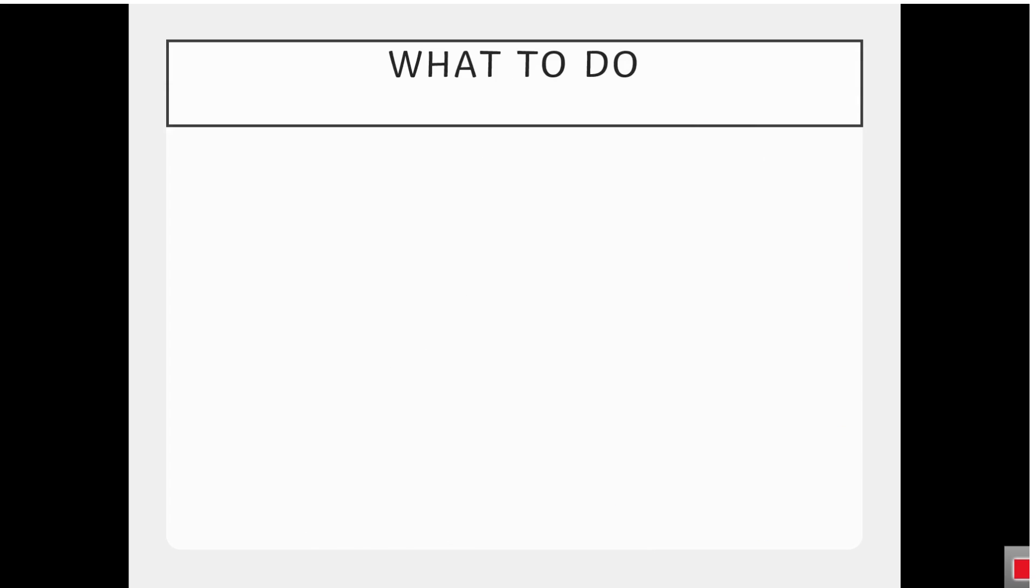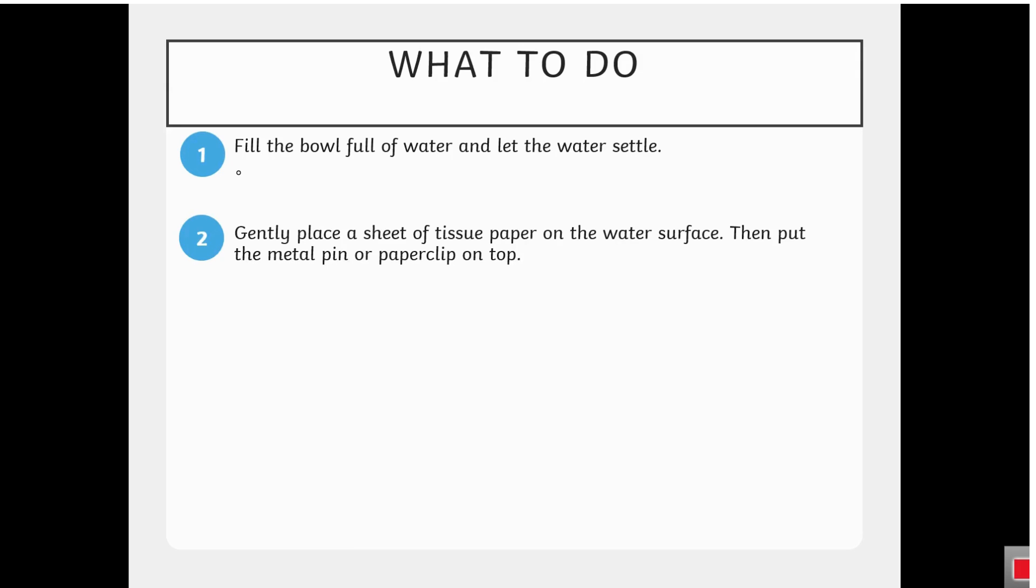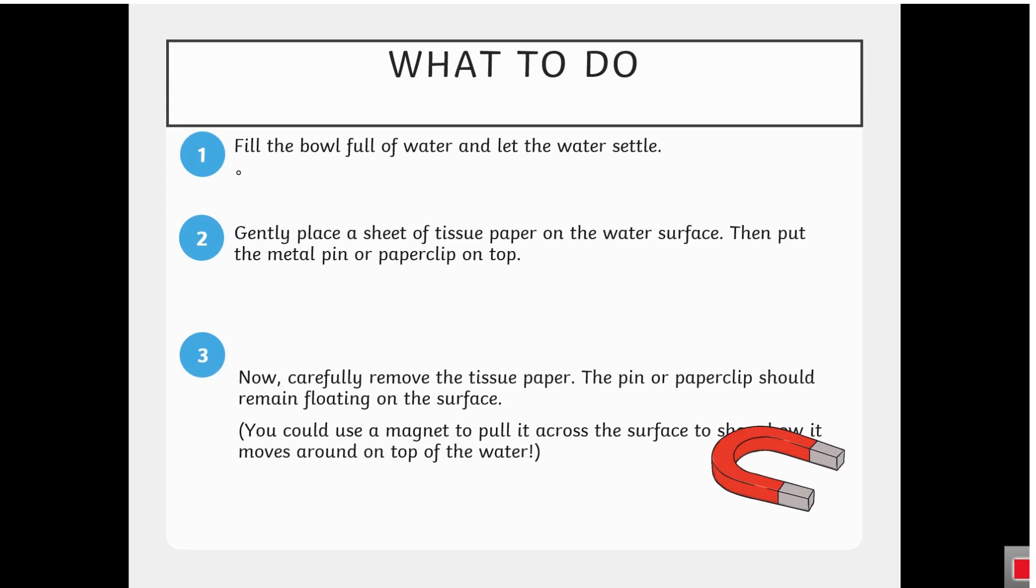What to do. Fill the bowl full of water and let the water settle. Gently place a sheet of tissue paper on the water surface. Then put the metal pin or paper clip on top. Now, carefully remove the tissue paper. The pin or paper clip should remain floating on the surface. You could use a magnet to pull it across the surface to show how it moves around on top of the water.